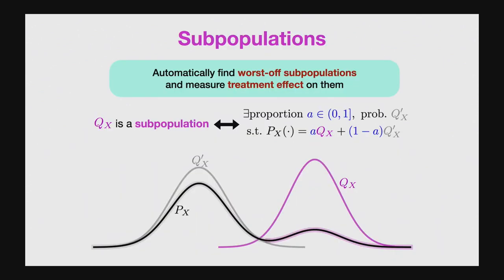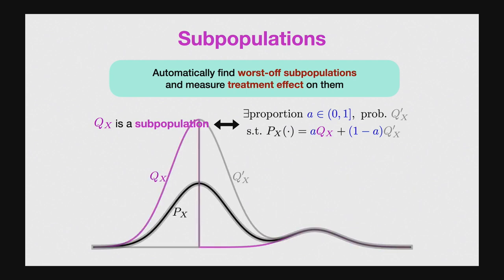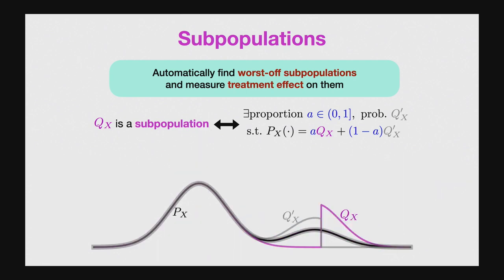Today I'll talk about a worst-case approach: we automatically consider an infinite set of subpopulations and measure the treatment effect on the worst-off subpopulation. Formally, I'll say that a distribution Q over features X is a subpopulation if there exists a demographic proportion A (a number between 0 and 1) and another distribution Q-prime, such that mixing Q and Q-prime according to this demographic proportion recovers the underlying study population. Pictorially, this purple curve is a subpopulation — if you mix it with the gray curve according to a demographic proportion of 20%, you exactly recover the underlying study population. Given a study population, there are of course infinitely many different subpopulations to consider.